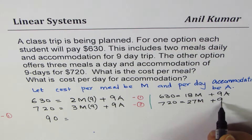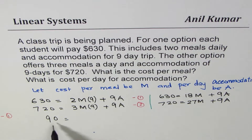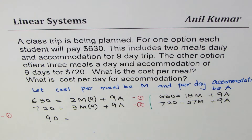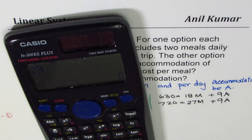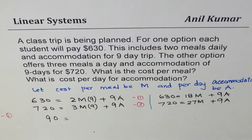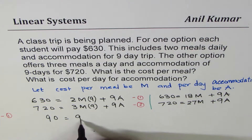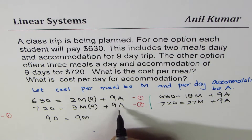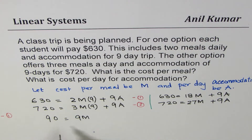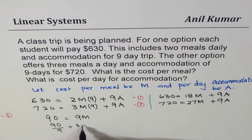On the right side, 27m minus 18m equals 9m, and 9a minus 9a equals zero. So we get 90 = 9m. Dividing both sides by 9, we get m = 90 ÷ 9 = 10. So the cost per meal is $10.